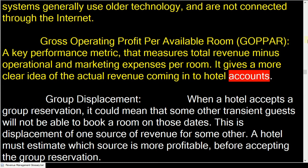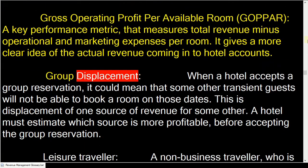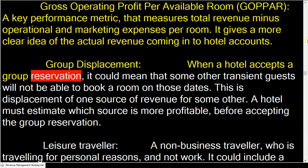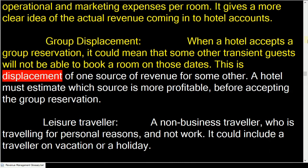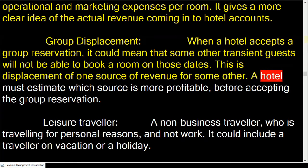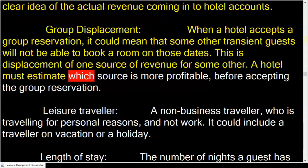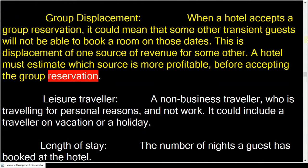Group displacement: when a hotel accepts a group reservation, it could mean that some other transient guests will not be able to book a room on those dates. This is displacement of one source of revenue for another. A hotel must estimate which source is more profitable before accepting the group reservation.